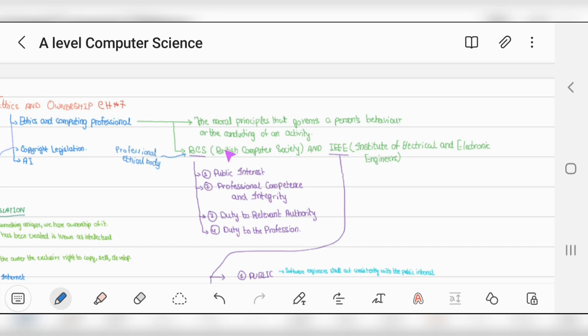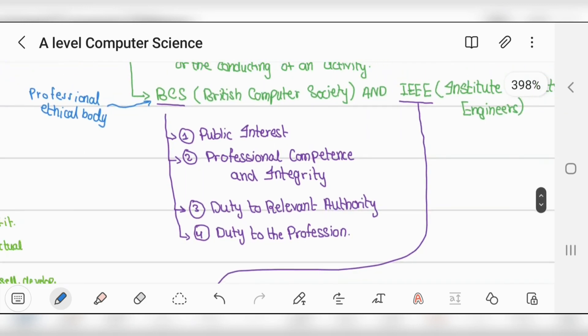There are two professional ethical bodies. BCS is British Computer Society with four rules: public interest, professional competence and integrity, duty to relevant authority, and duty to the profession - practicing your profession ethically and skillfully with honesty.